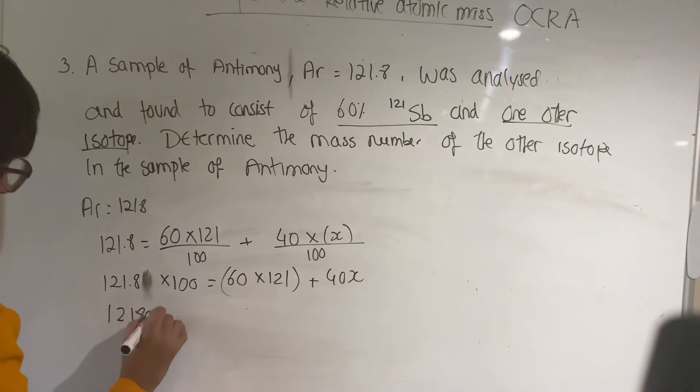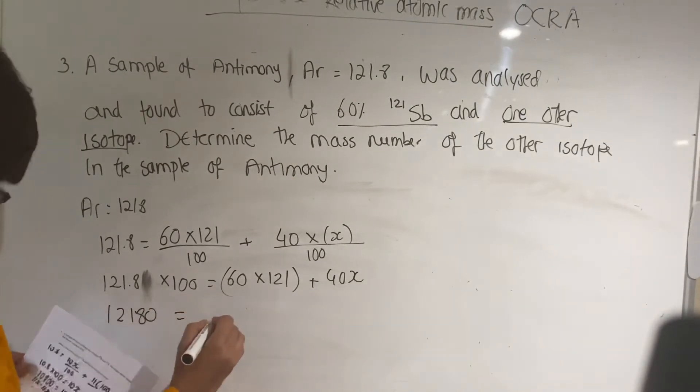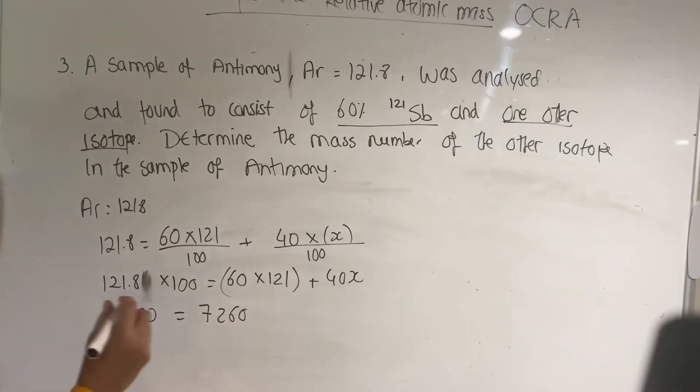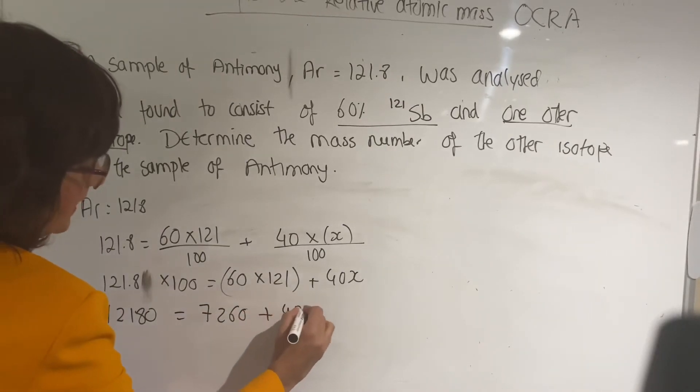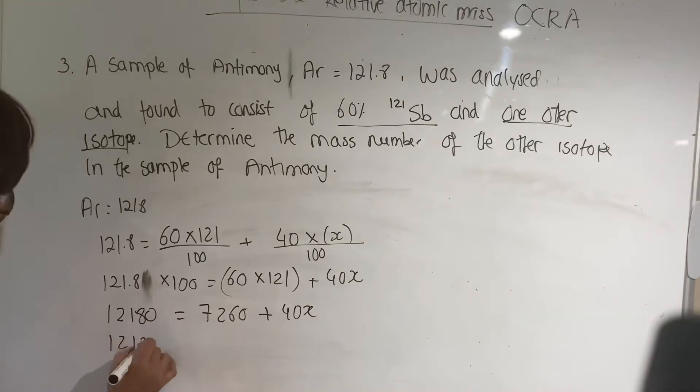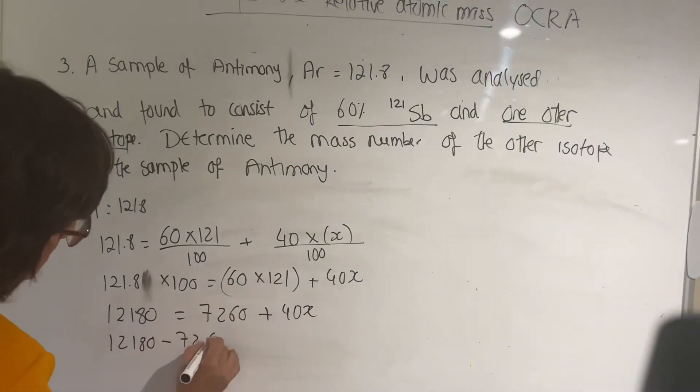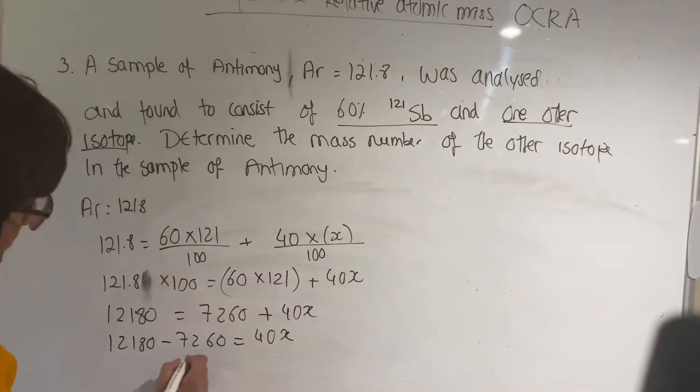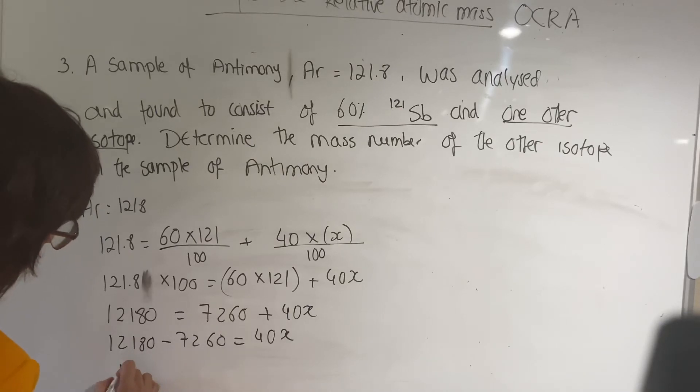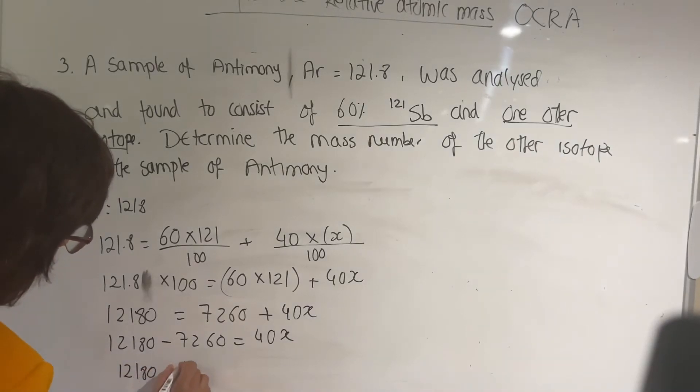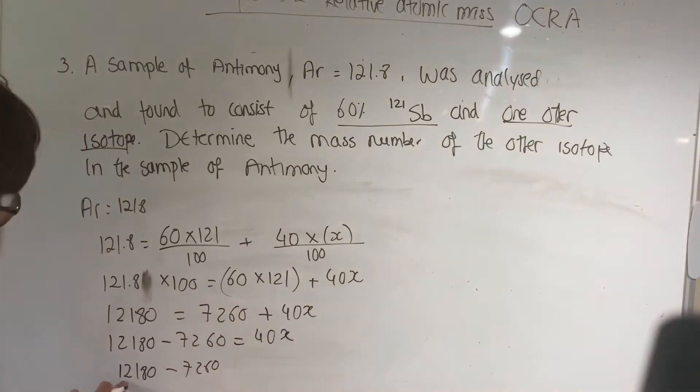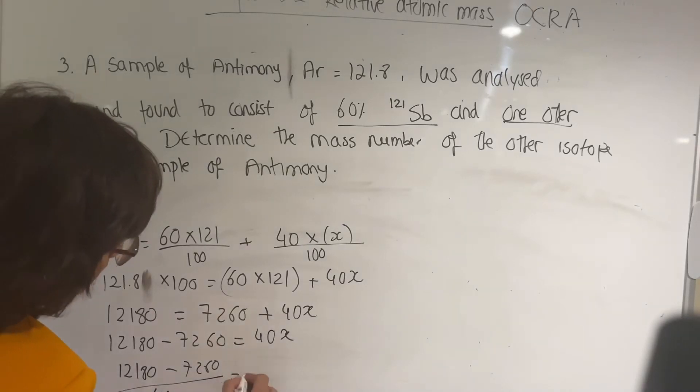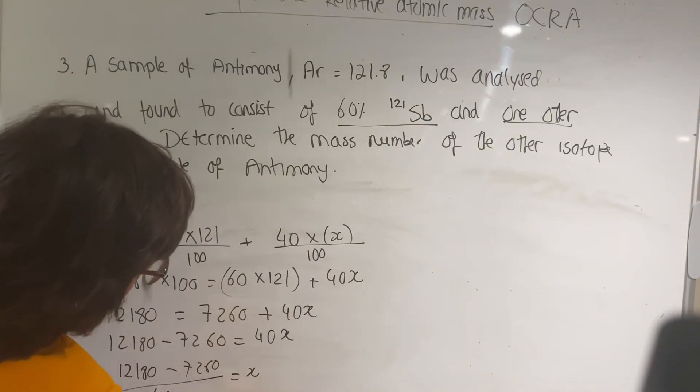Then you can rearrange this equation. So this one will give you 12,180 equals to 7,260 (that's the multiplication of 60 by 121) plus 40x. If you rearrange this, it goes 12,180 minus 7,260 equals to 40x.